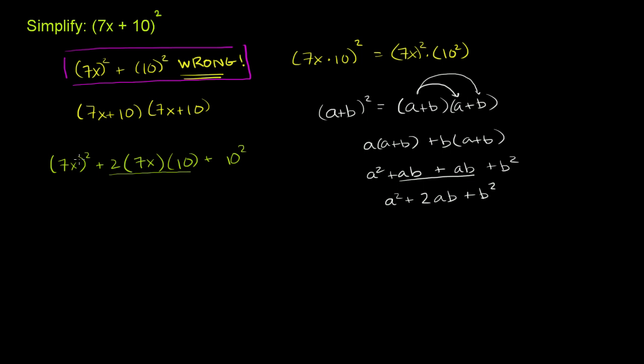7x squared, that's 7 squared times x squared. So 7 squared is 49 times x squared. When you multiply this part out, 2 times 7 times 10, that's 14 times 10, which is 140. And then we have our x. No other x there. And then plus 10 squared. So plus 100. And we are done.